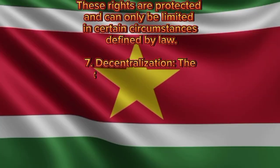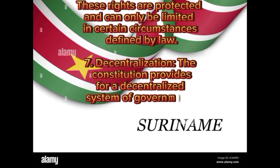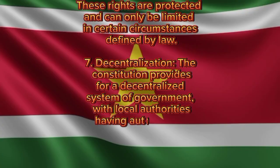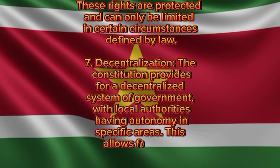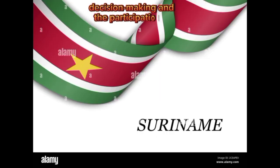Decentralization: the Constitution provides for a decentralized system of government, with local authorities having autonomy in specific areas. This allows for local decision-making and the participation of citizens in local governance.